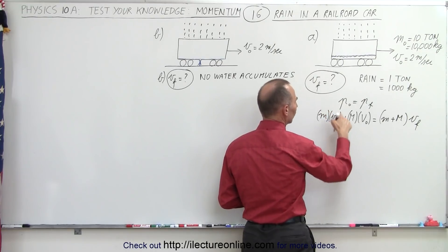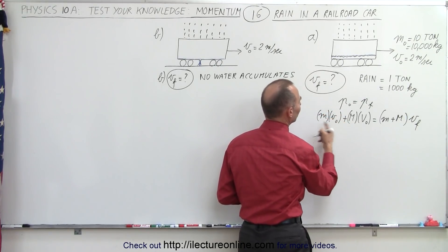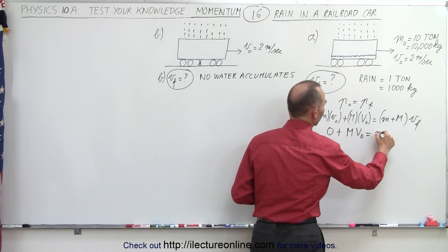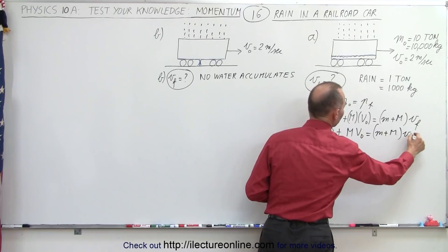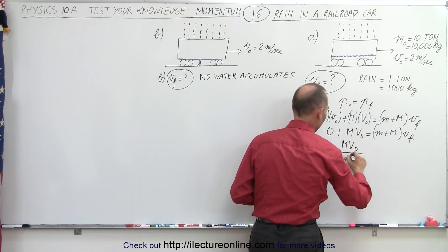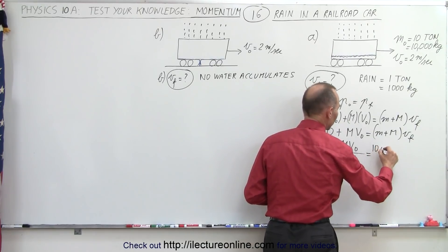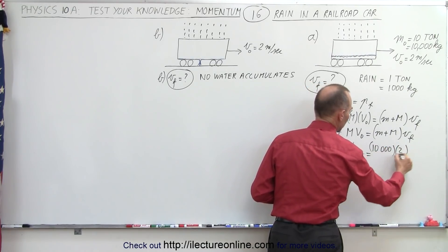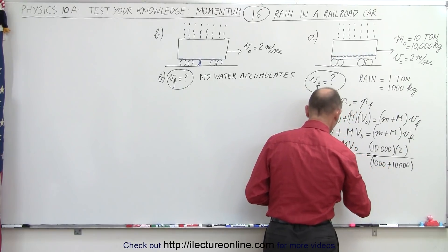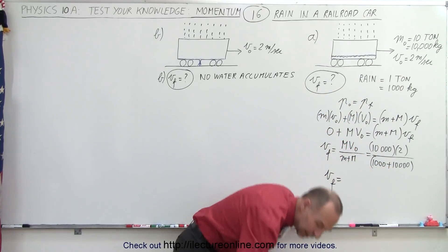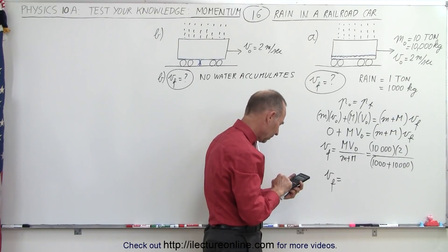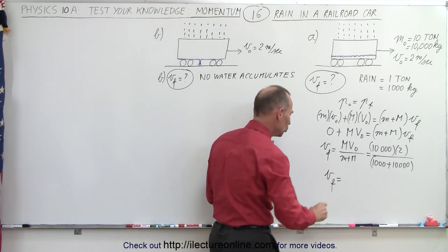The water's initial x-velocity is zero, so we have: mass of the train times initial velocity equals (m + M) times v_final. Therefore v_final equals the mass of the car times initial velocity divided by the total mass. That gives us 10,000 kg × 2 divided by (1,000 + 10,000), which is 20,000 divided by 11,000 — equal to 1.82 meters per second.